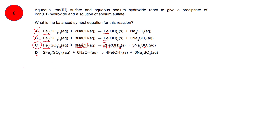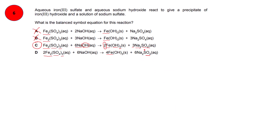Checking option D: two times two gives four iron atoms, which balances. However, SO4 sulfate is multiplied by three on the left giving three sulfate groups, while on the right SO4 is multiplied by six giving six sulfate groups — that is not balanced. So eliminate option D as well. Option C is confirmed as correct.